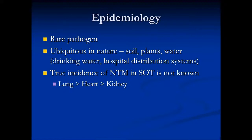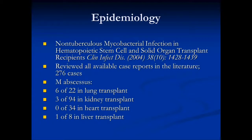M. abscessus is generally a rare pathogen but is ubiquitous in nature — found in soil, plants, and water, particularly drinking water, showers, and hospital distribution systems. The true incidence of any non-tuberculous mycobacteria in organ transplant is not well known and is largely based on case series and case reports. Lung transplant appears to have the most reported cases of M. abscessus. A large case review published in CID in 2004 by researchers at Harvard reviewed all available literature from the 1960s–70s onward.